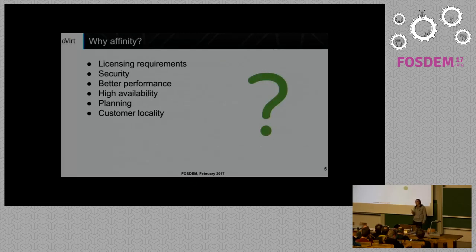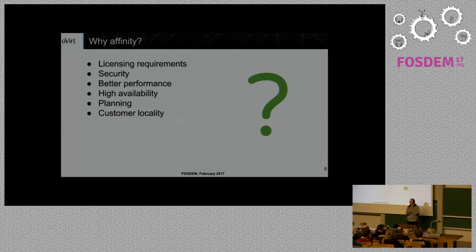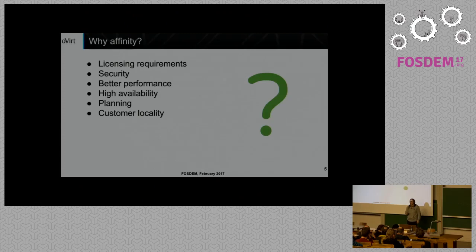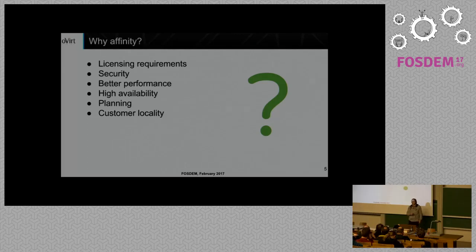Why might you actually want to use affinity in the first place? There are a couple of topics: licensing requirements that might require you to use affinity, security considerations, better performance when certain VMs are together or not together, high availability or preventing high availability compromises, planning — that's purely management functionality so your data center behaves the way you want — or customer locality, which has something to do with latency.